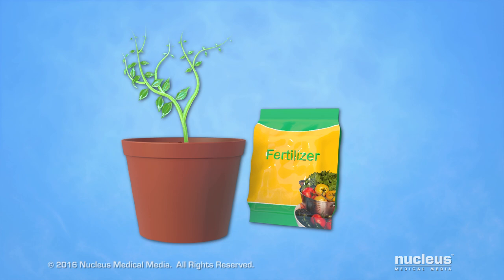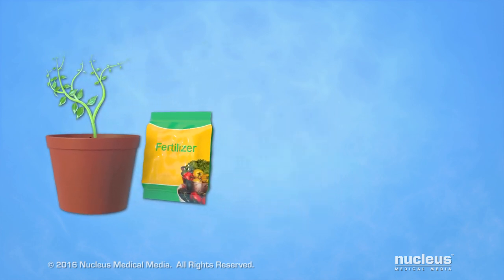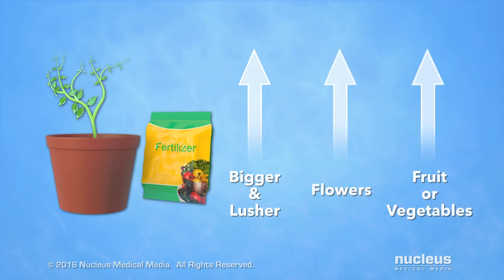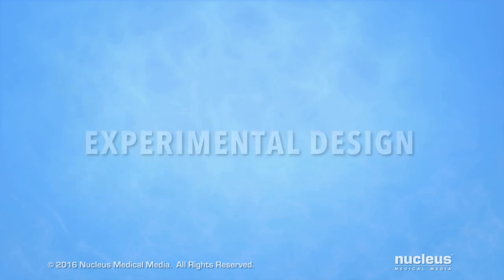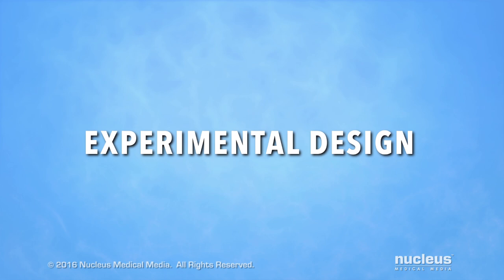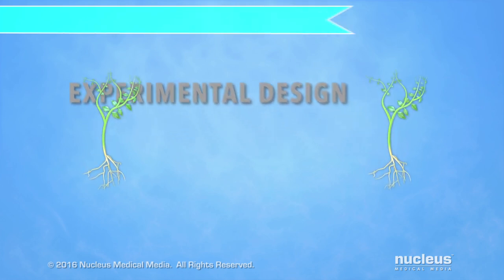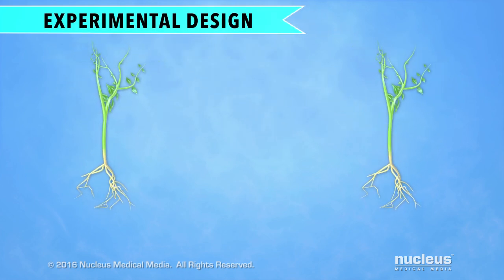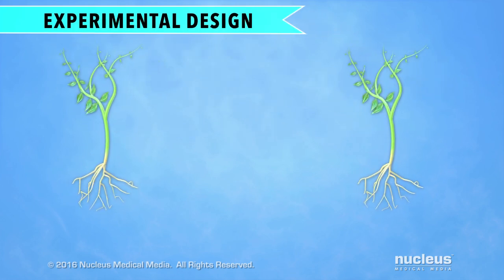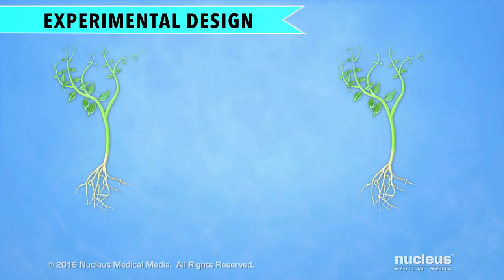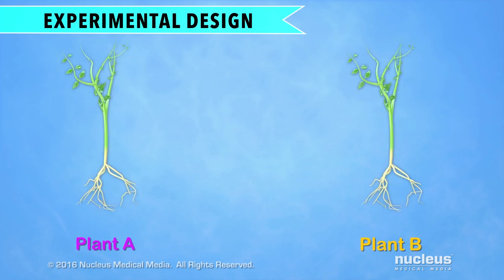Let's design a controlled experiment to test a fertilizer which claims it makes plants grow bigger, lusher, and perhaps produce more flowers, fruit, or vegetables. If you wanted to see if the fertilizer works, how would you set up a controlled experiment to test this claim? First, you would get two plants of the same species. Let's call them Plant A and Plant B.